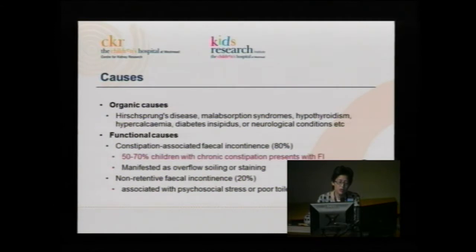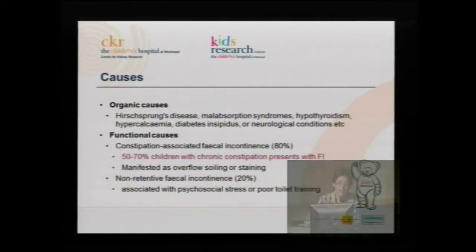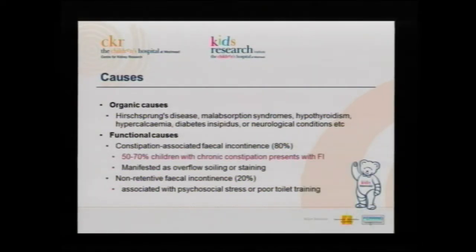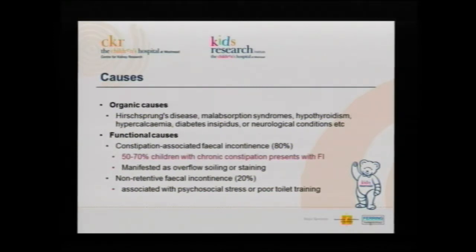Functional causes are broken into constipation-associated faecal incontinence, which is by far the majority — about 80% — and non-retentive faecal incontinence, not associated with constipation, in the 20%. Another way of thinking about the constipation-associated group is to think about kids with chronic constipation. In fact, 50 to 70% of children with chronic constipation also have faecal incontinence, so constipation and faecal incontinence are quite closely linked, but not always.